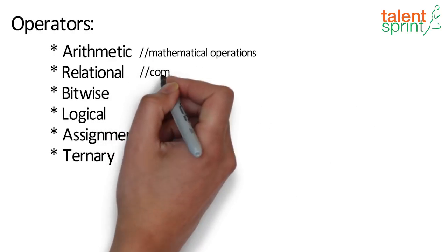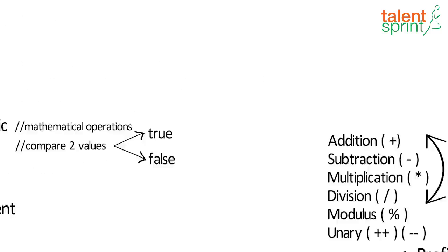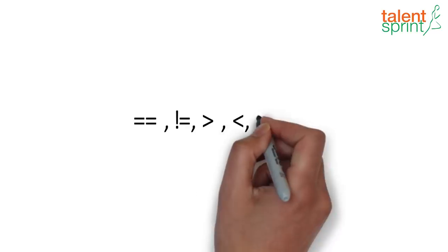The relational operators compare two values and give the result as true or false. And this is the list of relational operators.